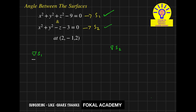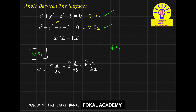Del means differential operator. That is: del equals i-cap ∂/∂x plus j-cap ∂/∂y plus k-cap ∂/∂z — it is a partial derivative. Now first of all, find Del S1. So S1 is this equation: x² + y² + z² − 9 = 0.